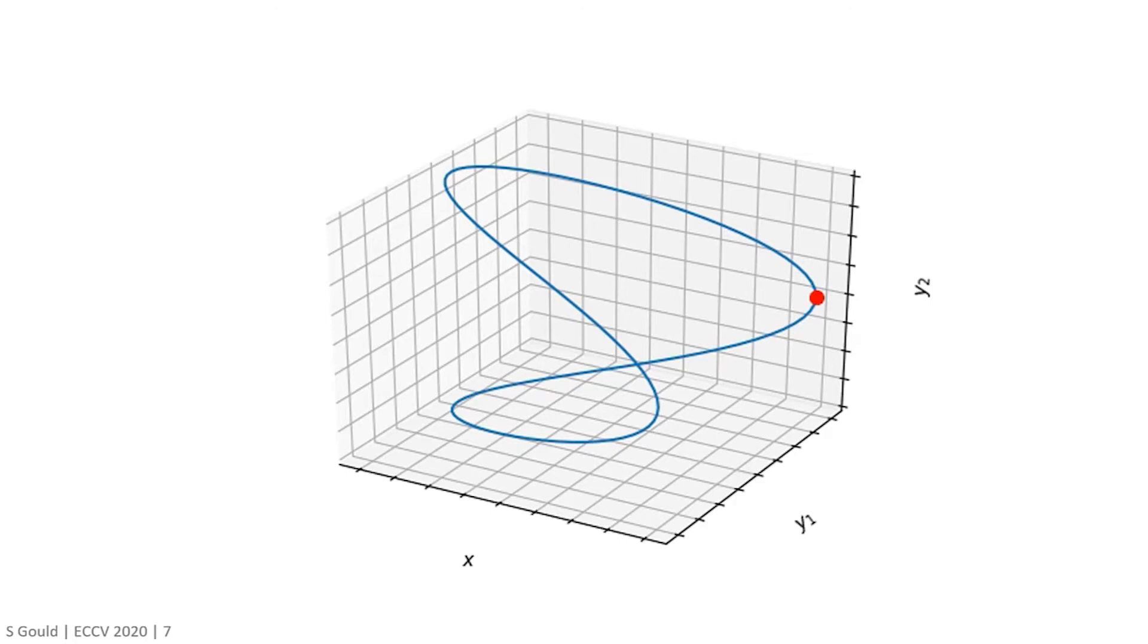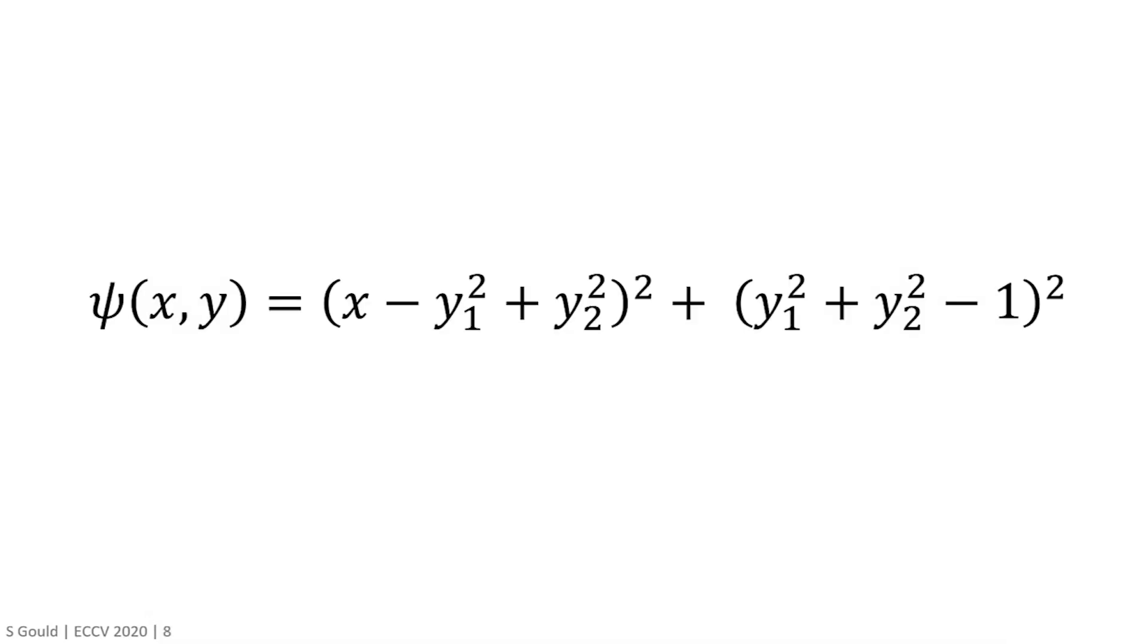Here, the input and output satisfy a relationship, but the output is not given directly as an explicit function of the input. Here I am showing an example of a relationship between a single input x and two output variables y1 and y2. Rather than specifying y as a function of x, we have that x and y satisfy some implicit function, psi of x and y equals zero. So given the input x, we need a method of finding the corresponding y's, i.e. those that satisfy the implicit function jointly with x. More on this later in the tutorial.